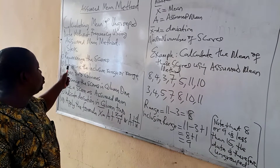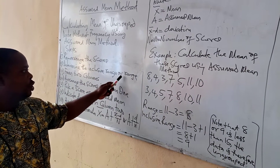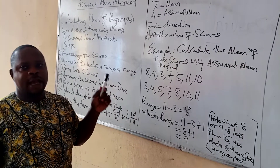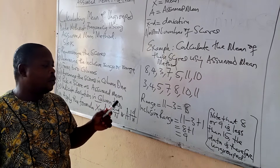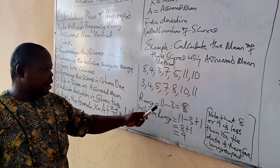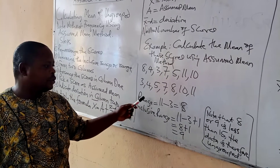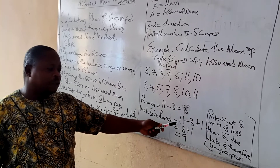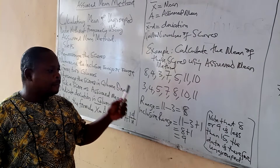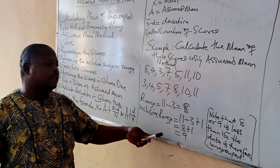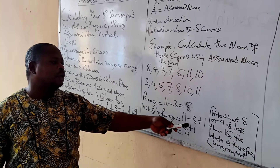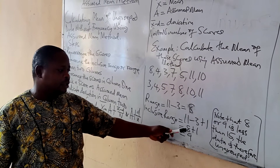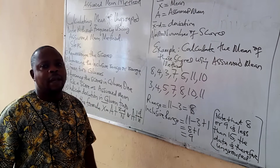The second step is to determine the range or inclusive range. The range is simply the highest score minus the lowest score. The highest score here is eleven and the lowest score is three, so the range is eight. The inclusive range is the highest score minus the lowest score plus one: eleven minus three plus one, giving an inclusive range of nine.